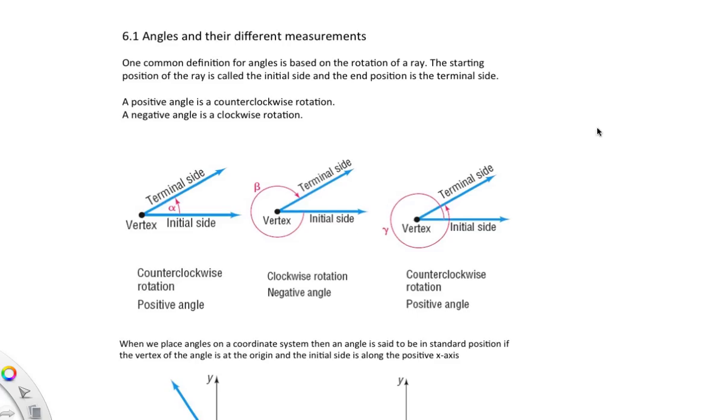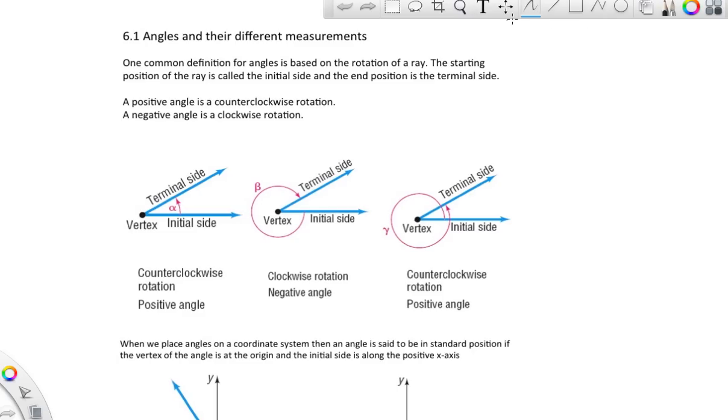Okay, 6.1 angles and their different measurements. A lot of this is review, some of this is vocabulary-based, so I'm not reading the whole thing. I'll try to point out some things that are important. For example, one way that we can define angles is as rotations.